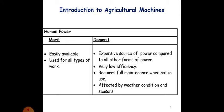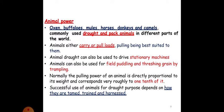Next comes animal power. Oxen, buffalos, mules, horses, donkeys, and of course camels are commonly used for drought and pack animals in different parts of the world. Animals either carry or pull loads, pulling being best suited to them. Animal drought can also be used to derive stationary machineries. Animals can also be used for field puddling and threshing grains by trampling. Normally, the pulling power of an animal is directly proportional to its weight and corresponds very roughly to one-tenth of it. Successful use of animals for drought purpose depends on how they are tamed, trained, and harnessed.